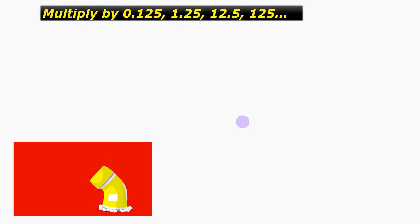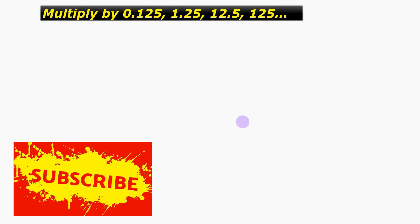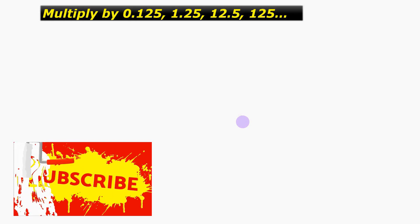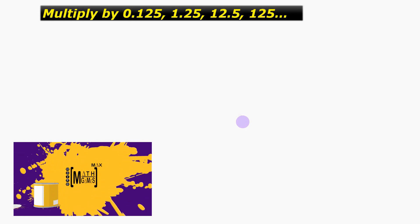In this video, we will be learning the shortcut method of multiplying any number by the numbers 0.125, 1.25, 12.5, 125 and so on. So, let's get started.